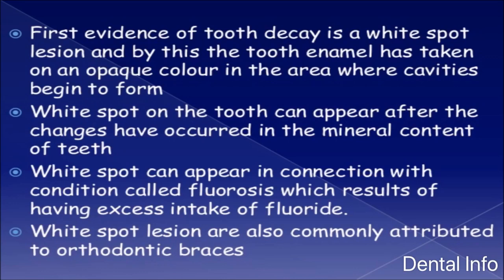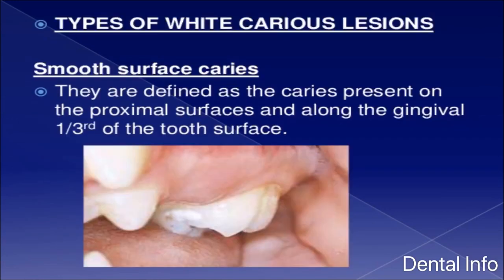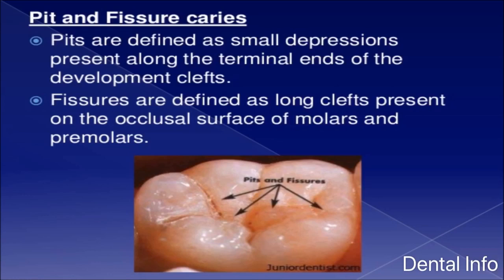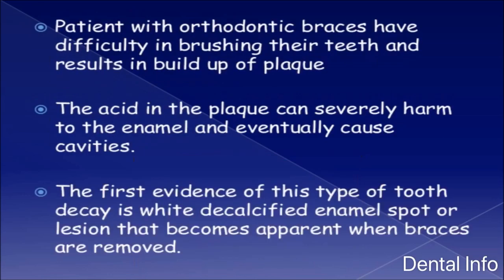White spot lesions are also commonly attributed to orthodontic braces. Types of white carious lesions include smooth surface caries — present on proximal surfaces and along the gingival one-third of the tooth — and pit and fissure caries, where pits are small depressions at the terminal ends of developmental clefts and fissures are long clefts on the occlusal surface of molars and premolars. Patients with orthodontic braces have difficulty brushing, leading to plaque buildup whose acid damages enamel and causes white decalcified lesions visible when braces are removed.